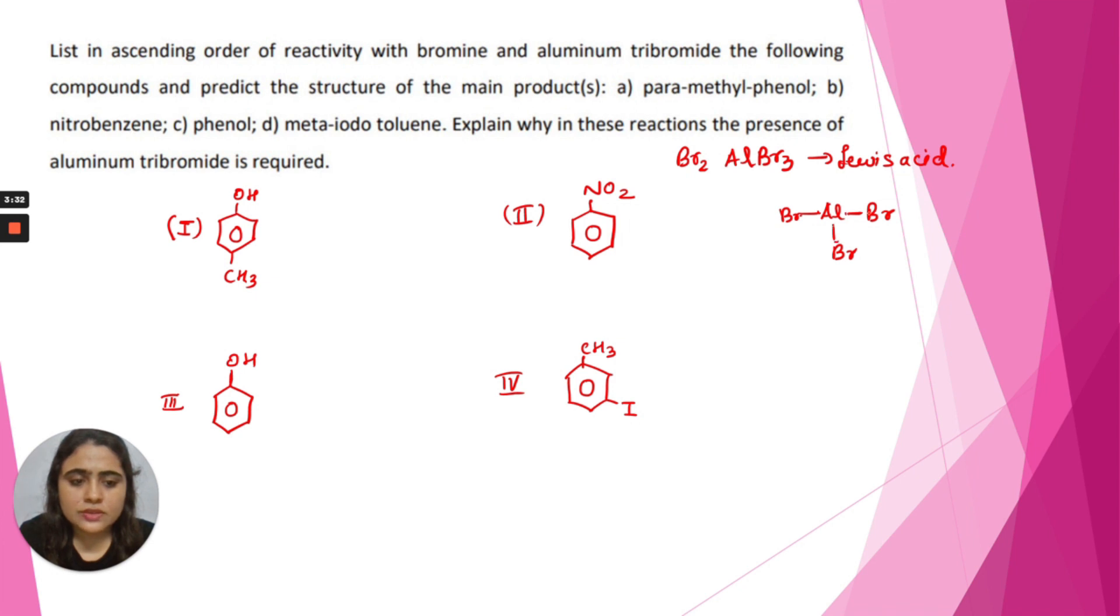We need two more electrons for the octet to get complete: 1, 2, 3, 4, 5, 6 - only six electrons are there. Two more electrons are needed, which is why this is a Lewis acid. And why do we use aluminum bromide? So that we can polarize this bromine non-polar molecule.